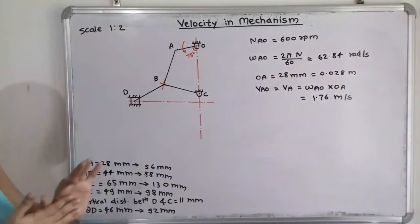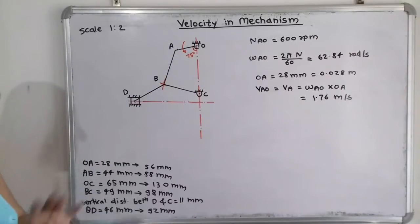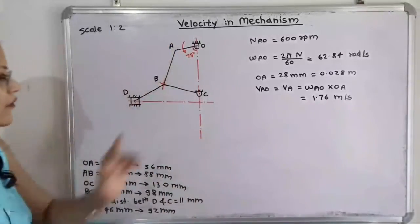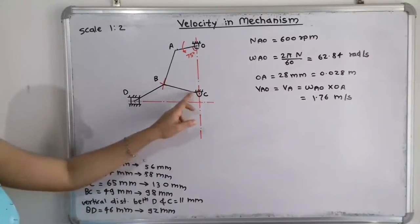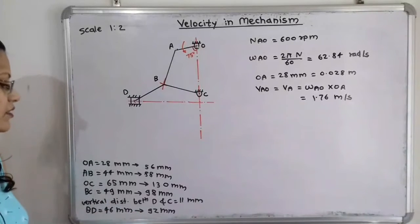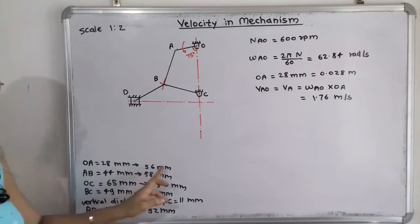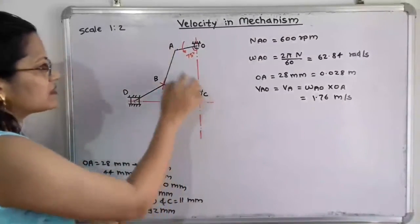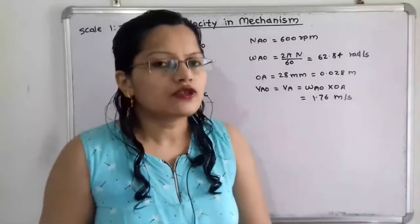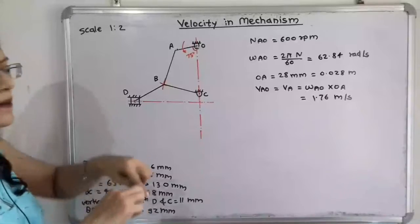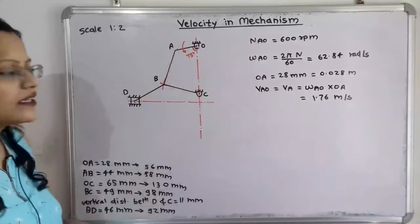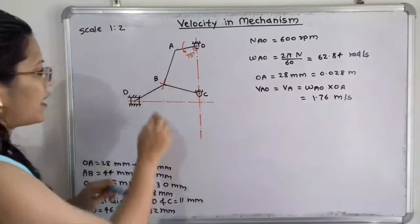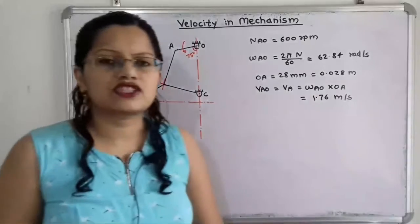From point A there is link AB, and from fixed point C there is link BC. The angle of inclination is not given for either, so we use compass arcs to locate point B. As per scale 1 is to 2: AB = 44 × 2 = 88 mm and BC = 49 × 2 = 98 mm. Taking A as center with radius 88 mm, draw arc R1. Taking C as center with radius 98 mm, draw arc R2. Their point of intersection is point B.